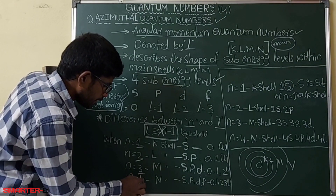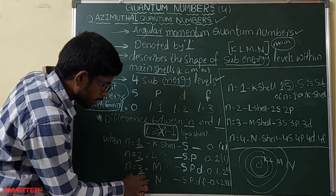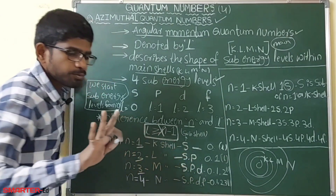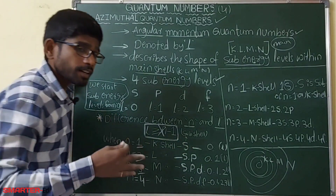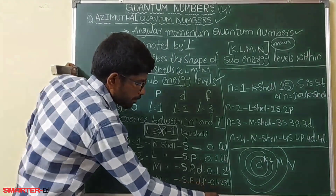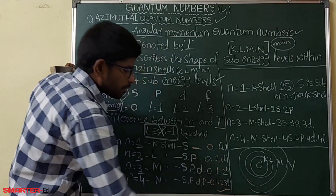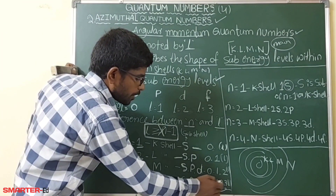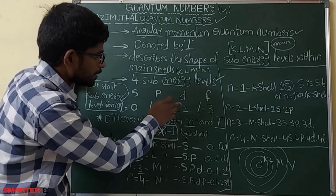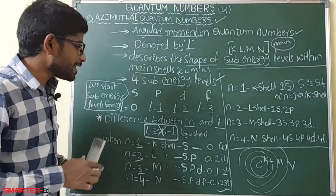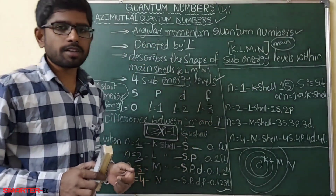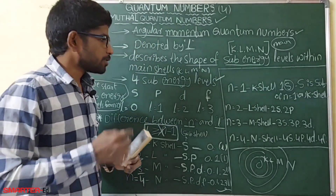When n equals 4, that is the N shell, and it has four sub-shells: s, p, d, and f, with l values 0, 1, 2, and 3. This is the relation between the principal quantum number and the azimuthal quantum number.